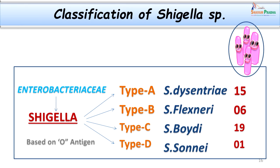Shigella is named after scientist Shiga who first discovered them, and they belong to the family Enterobacteriaceae. The genus is divided into species based on the O antigen on their cell wall. Type A is Shigella dysenteriae — the major pathogen causing very severe shigellosis — with 15 different subgroups. Type B is Shigella flexneri, Type C is Shigella boydii, and Type D is Shigella sonnei.